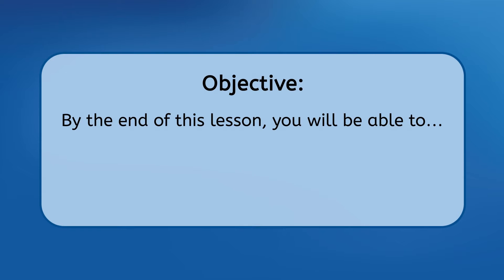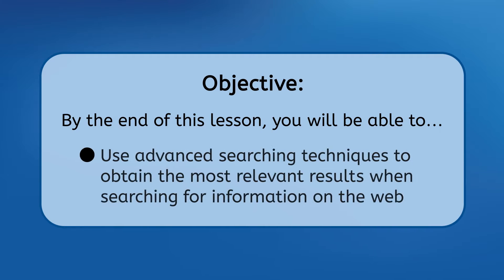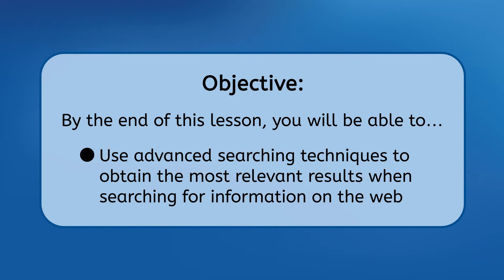You'd think a quick search for snow would be enough, but between all those irrelevant results, there was not a single photo of snow to be seen. If you've ever had this happen to you, where you tried searching for something and ended up getting everything except what you wanted, stick around and learn how to make the most of your searches in the future. By the end of this lesson, you will be able to use advanced searching techniques to obtain the most relevant results when searching for information on the web. Let's get into it.